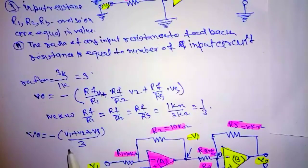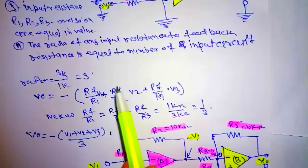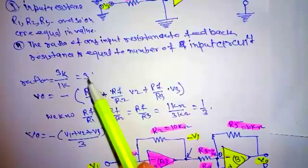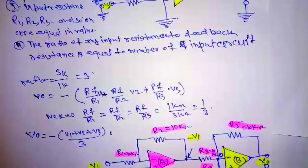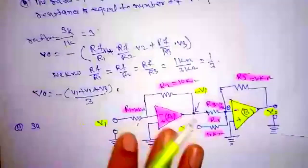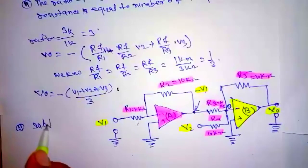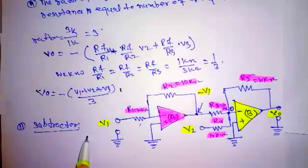This is how the summing amplifier works as an averaging amplifier. Now the subtractor. A summing amplifier can be used to provide an output which is equal to the difference of input voltages. Then this circuit is called Subtractor.